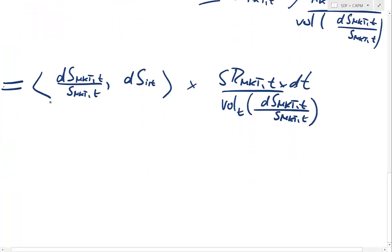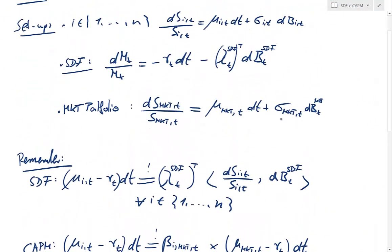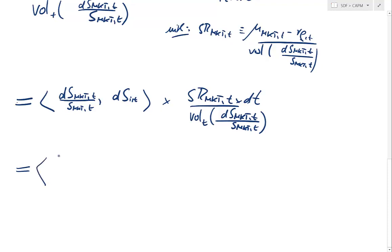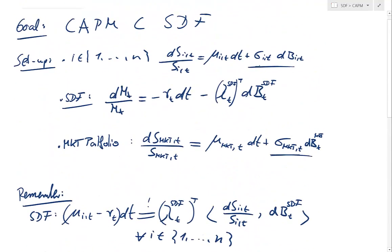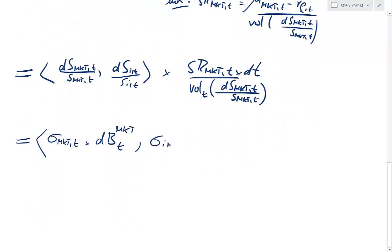Let's look at what that instantaneous covariation is. Here's what the market innovation looks like, and what instrument i's innovation looks like. We plug those in: the market innovation is sigma_market,t times the market shock dB_market,t. Then we have the covariation with sigma_i,t dB_i,t — that's the innovation in instrument i.